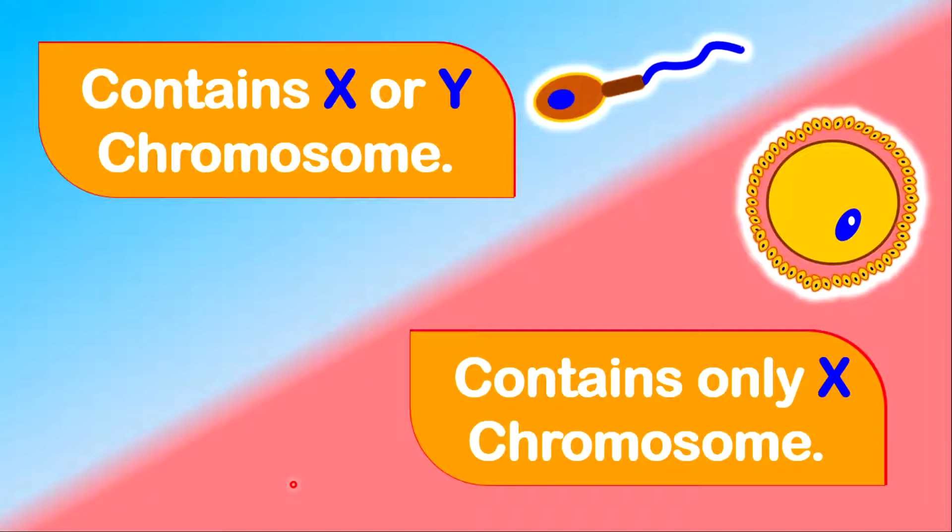Inside of the sperm, it can be either or, one of two chromosomes, either X or Y chromosome in each sperm cell. However, in the egg cell, there can only be X chromosome. So the difference between egg and sperm, the sperm cells can have a possibility of X or a Y, but all the eggs will only have X chromosome.